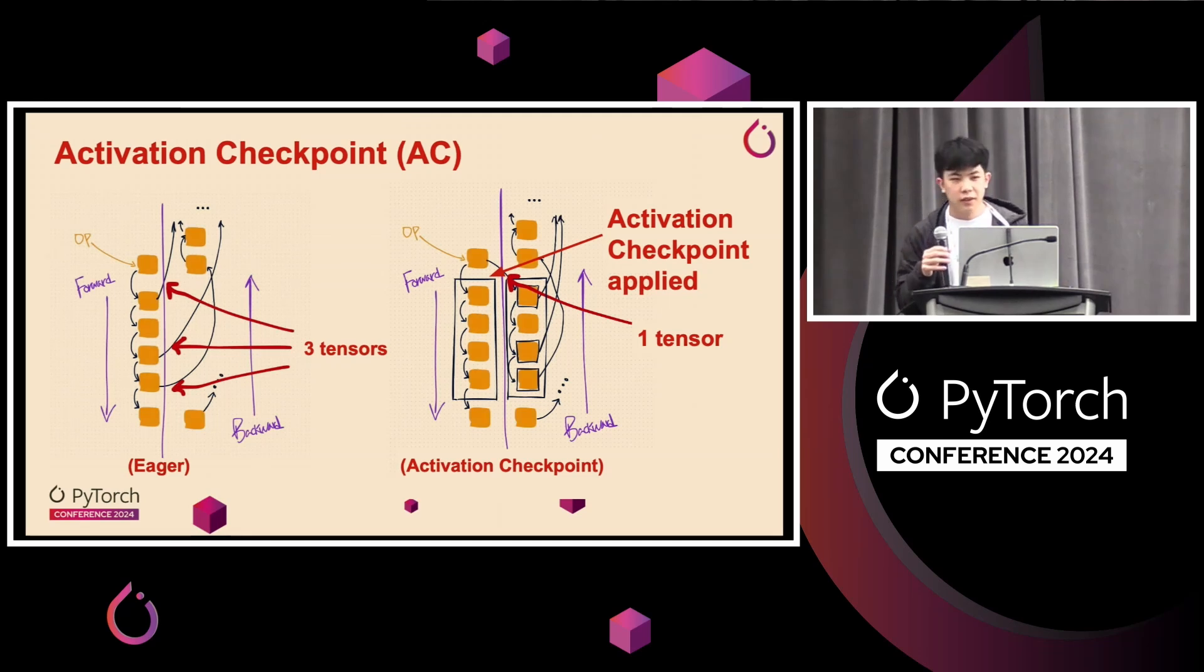So the first technique I'll introduce is activation checkpointing. So on the left here is sort of that same diagram that you saw before, where you are saving three tensors for backward. And on the right here is where activation checkpointing is applied. So those black boxes represent us checkpointing those middle four operations during forward. So what this means is that instead of saving three tensors, you only need to save one tensor representing that input to that black region or that black box region. And during backward, given that we have this input tensor now, we can recompute those four tensors that we checkpointed. And at that point is when we actually save those tensors for backward, at which point we are much closer to when those activations are used. And this has the effect of reducing peak memory.